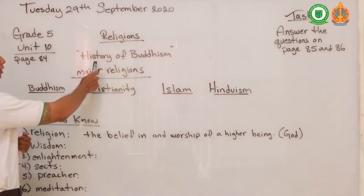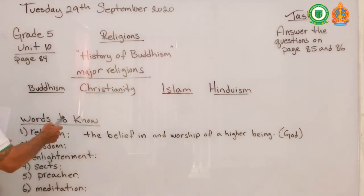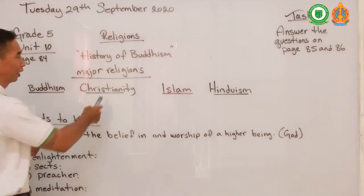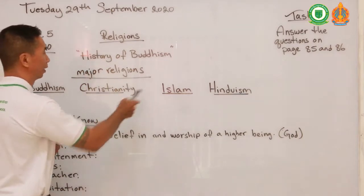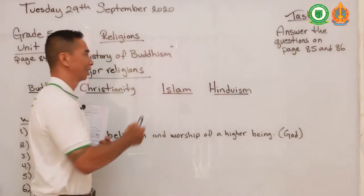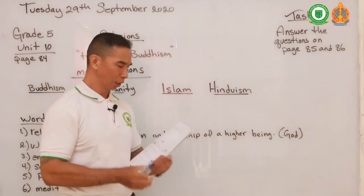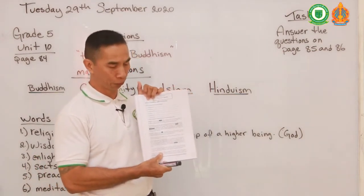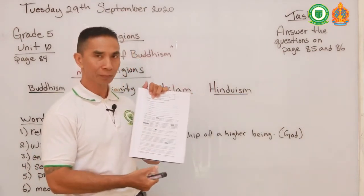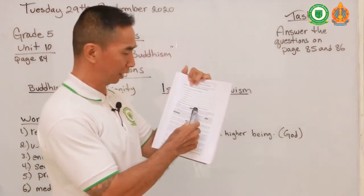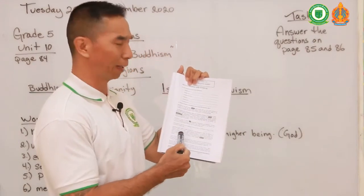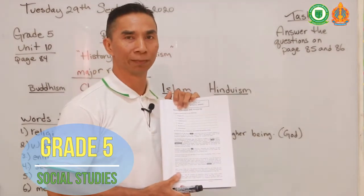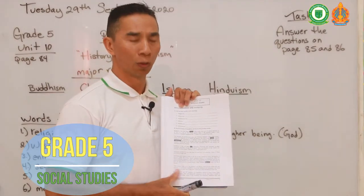For this week we're going to be studying about the history of Buddhism, so we're going to learn more about Buddhism. In the following weeks we will learn about Christianity, Islam, and Hinduism. Please take out your book and turn to page 84. On page 84 there are some readings about the history of Buddhism.